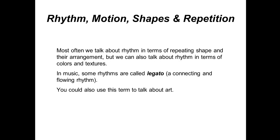Rhythm, motion, shapes, and repetition. We often talk about rhythm in terms of repeating shapes and their arrangement, but we can also talk about rhythm in terms of color and texture. In music, some rhythms are called legato — a connecting or flowing rhythm.